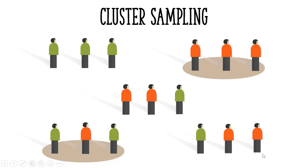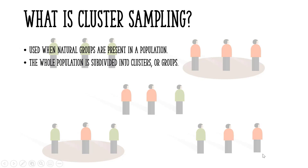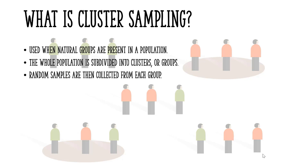In this video, I'll show you cluster sampling, its requirements, and the difference between cluster and stratified sampling. Cluster sampling is used when natural groups are present in a population. The whole population is subdivided into clusters and random samples are then collected from each group.